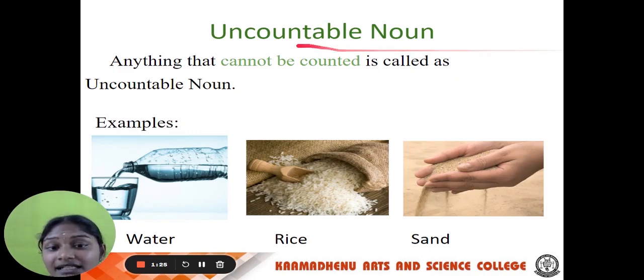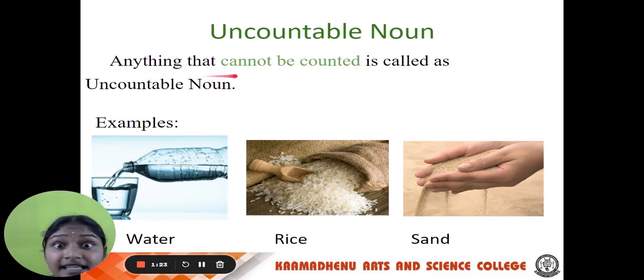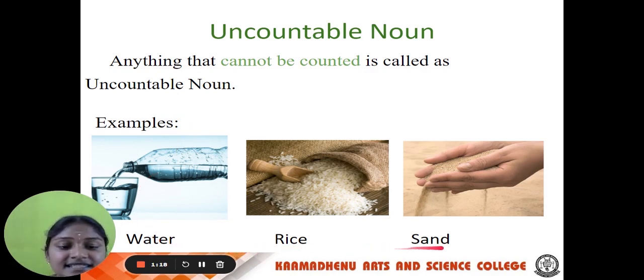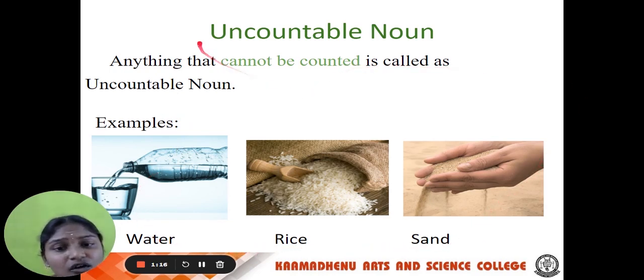Next one, uncountable noun. Anything that cannot be counted is called an uncountable noun. For example, water, rice, sand — these are called uncountable nouns.